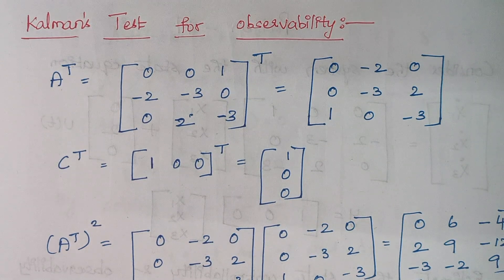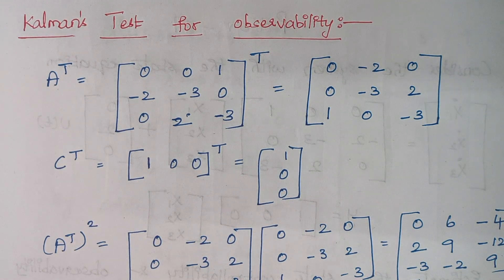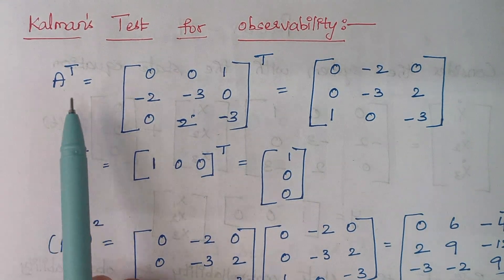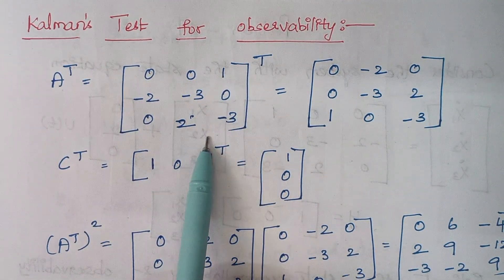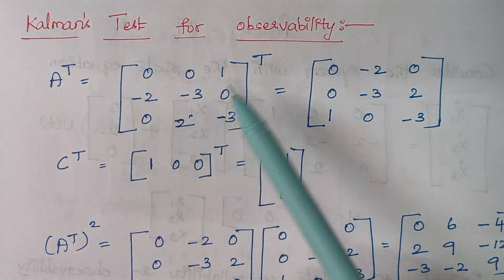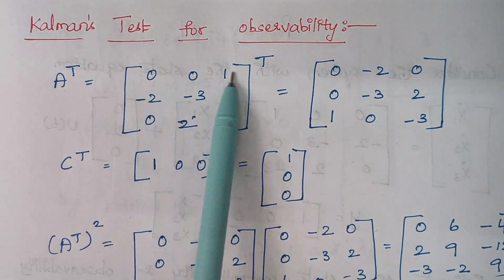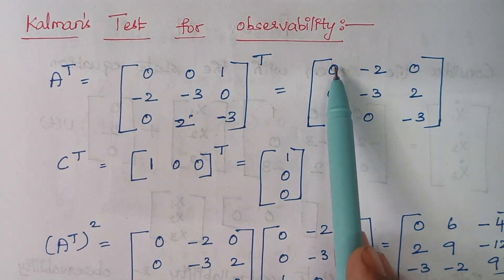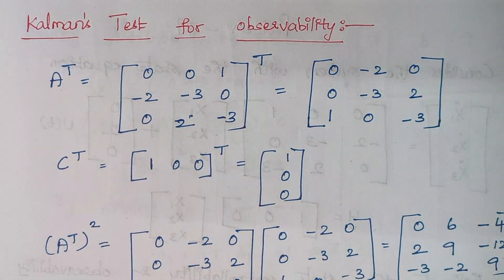Now we proceed with Kalman's test for observability. Again we will form a matrix and take the determinant. The procedure is slightly different here. The first step is to compute A transpose. This is your A matrix — taking the transpose means converting rows into columns. You see row [0 0 1] becomes a column, and similarly the other rows are converted into columns.